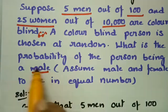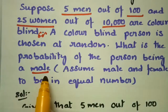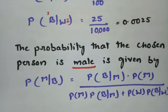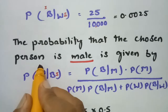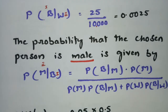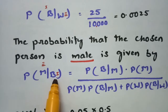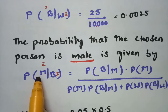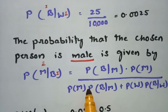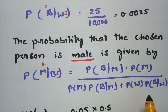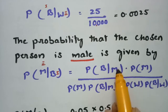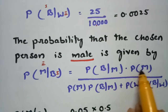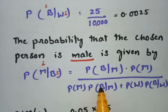The question asks: what is the probability that the randomly chosen colorblind person is male? That is, we need P(M|B) — first the person is colorblind, and second, the person is male. According to Bayes' theorem, P(M|B) = P(B|M) · P(M) divided by [P(M) · P(B|M) + P(W) · P(B|W)].